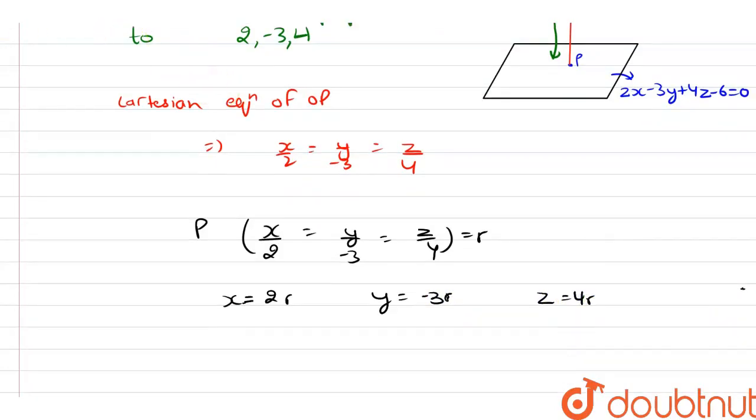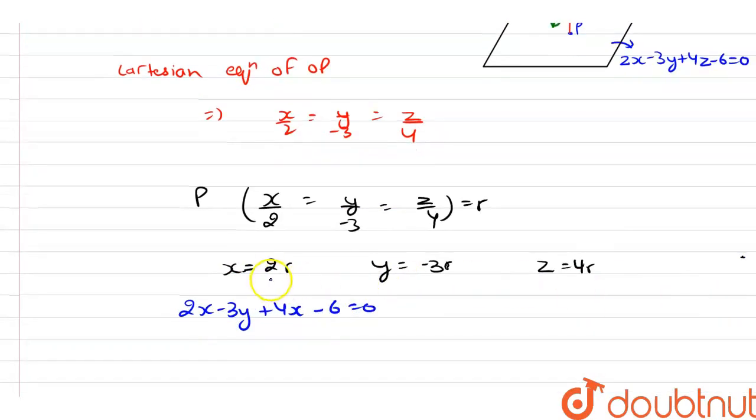Now this point lies on the plane, that is 2x - 3y + 4z - 6 = 0. Now let's put x, y, z as 2r, -3r, and 4r.